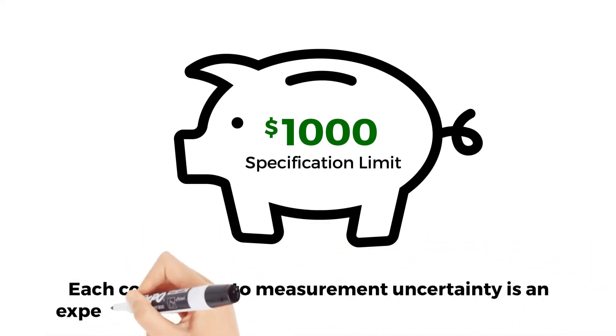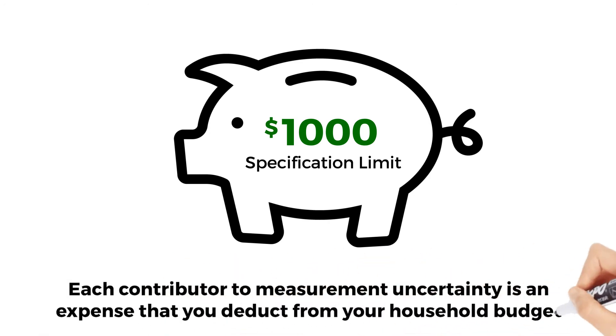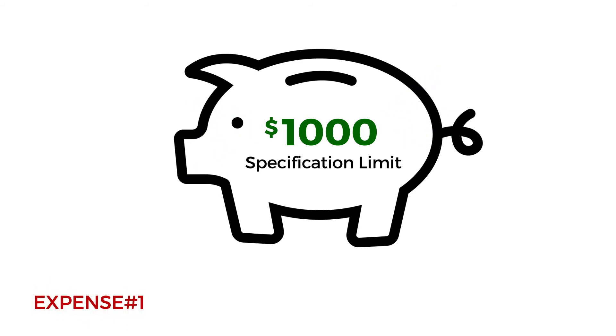Each contributor to measurement uncertainty is an expense that you deduct from your household budget. Since we cannot spend more than what is in the piggy bank, we need to total our expenses and make sure they do not exceed our income.